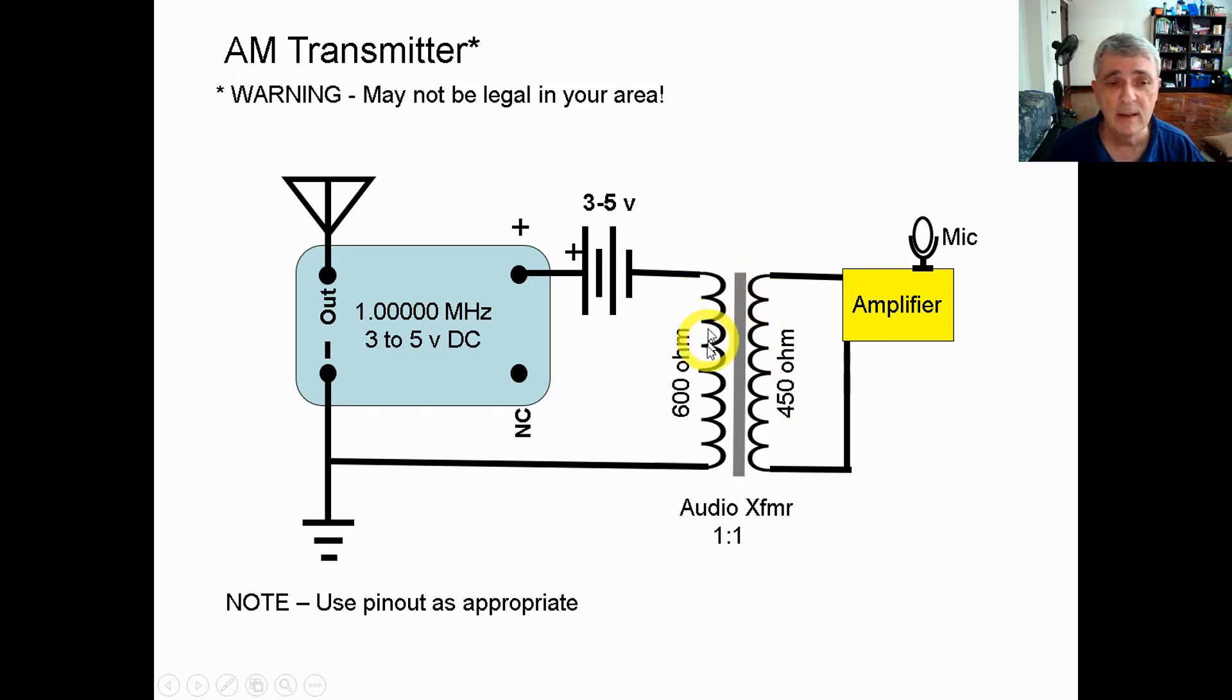That creates electromagnetic interference on this coil, and that electromagnetic interference will change the voltage input to our oscillator. That will manifest itself as a changing signal, a slight wiggle on our carrier wave. So that's it.